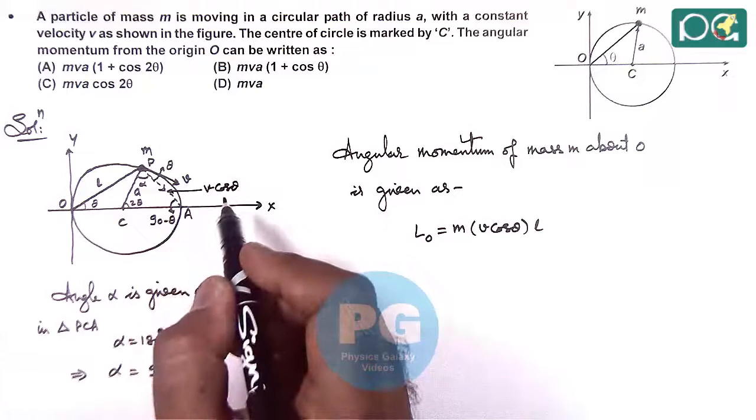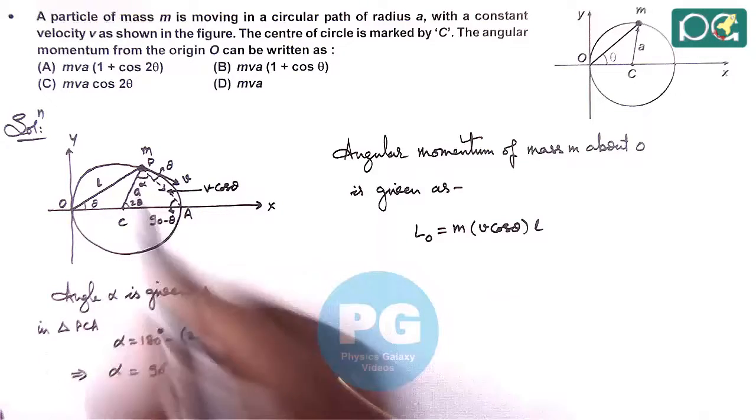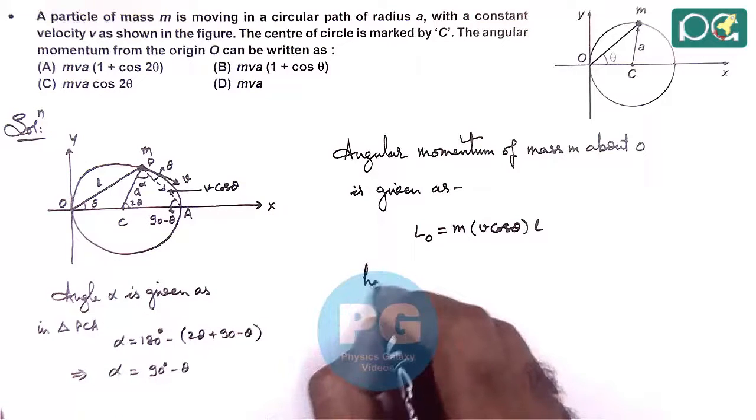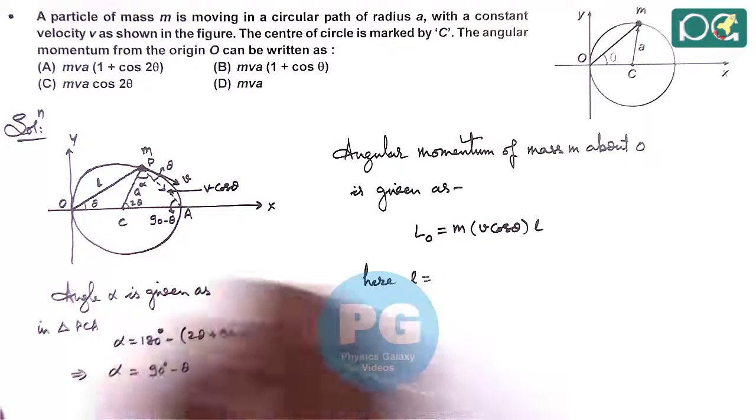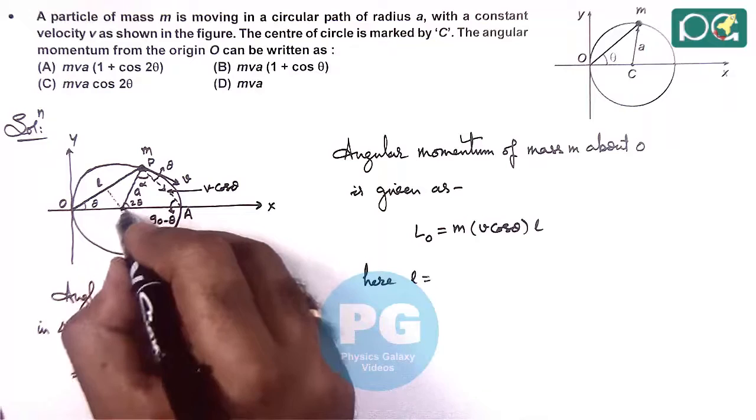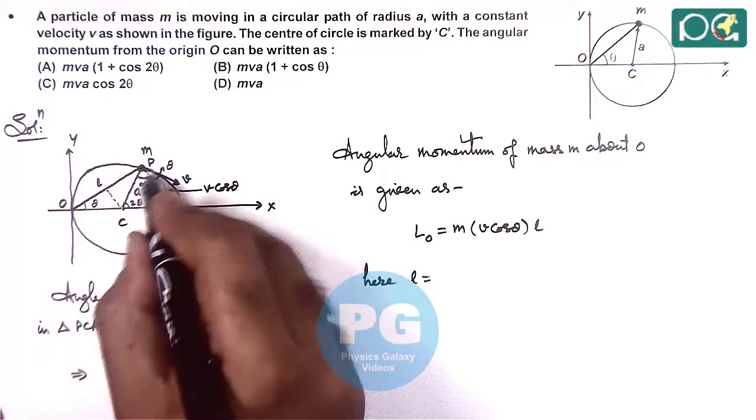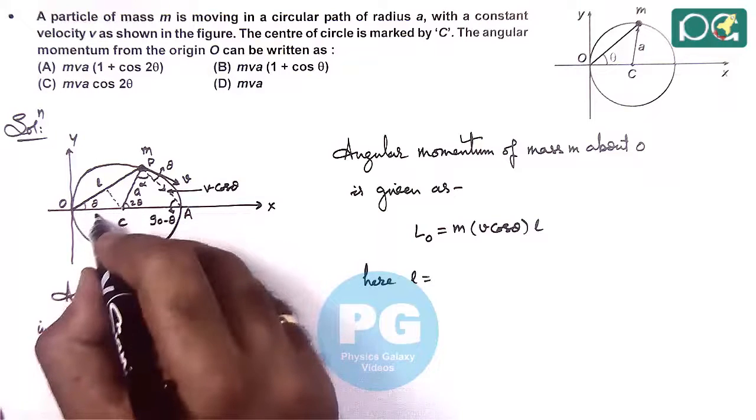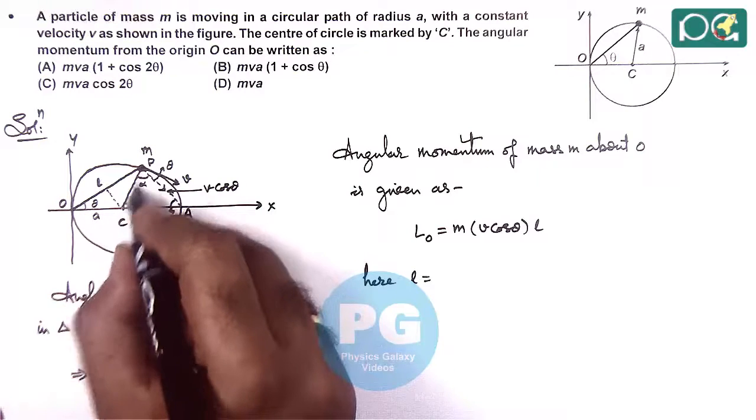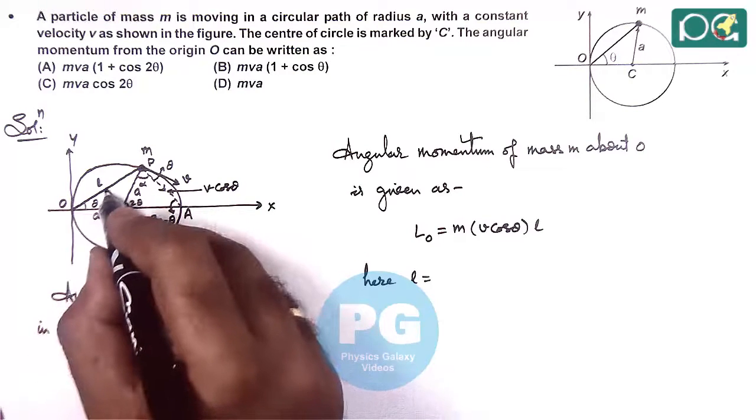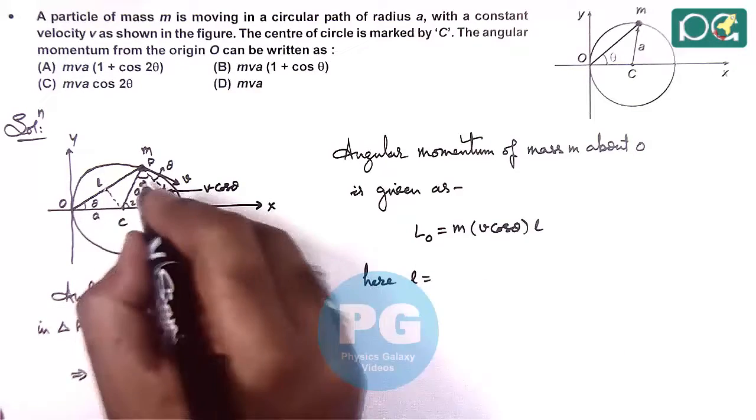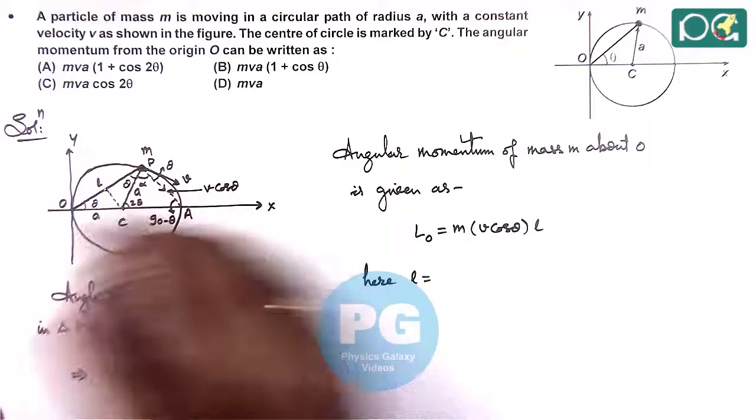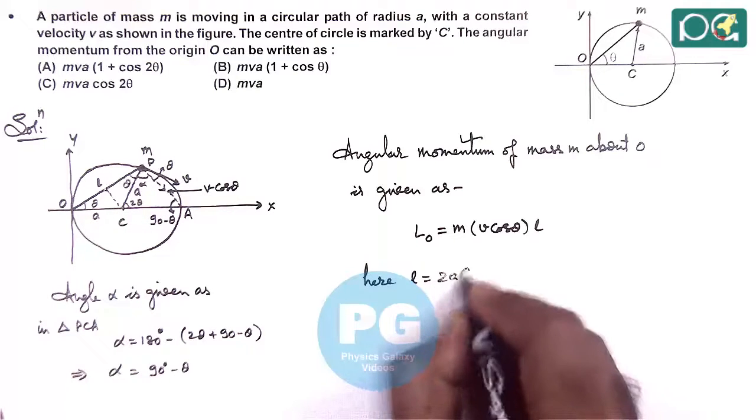So in this situation if we wish to calculate the value of L, then here we can write L is equal to, if we drop a perpendicular from C to line OP, then this is A the radius of circle, this is also A. So this is A cos theta and A cos theta. This angle will also be theta. So we can write L is 2A cos theta.